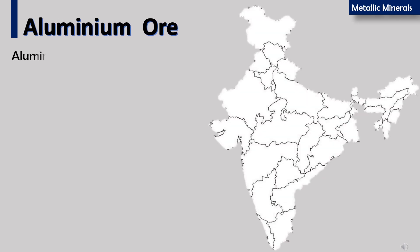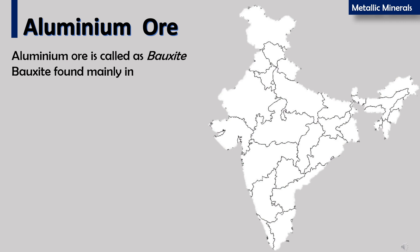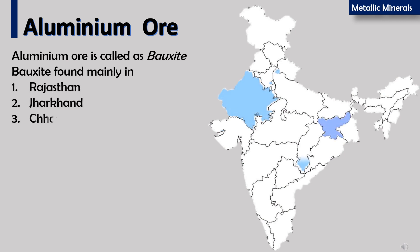Aluminium ore is called bauxite. Bauxite is found mainly in Rajasthan, Jharkhand, Chhattisgarh, and Karnataka.